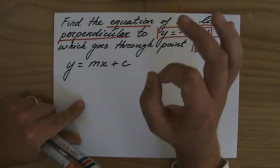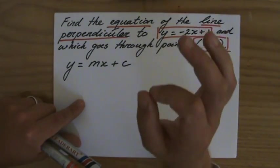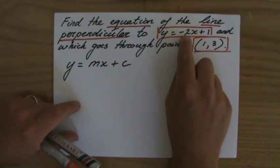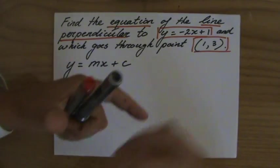What did I learn about gradients and perpendicular lines? The gradient is the negative reciprocal.